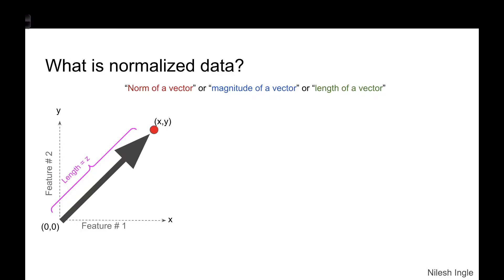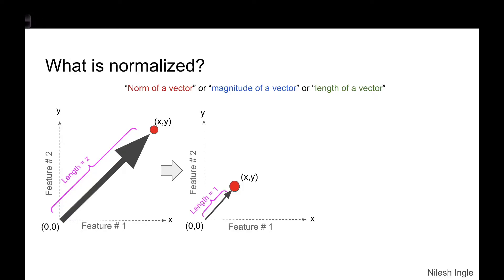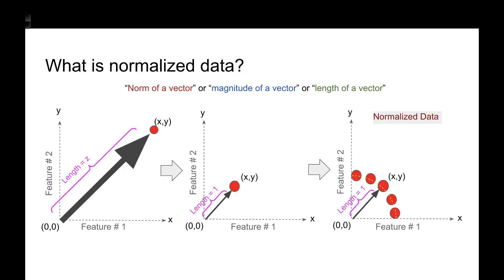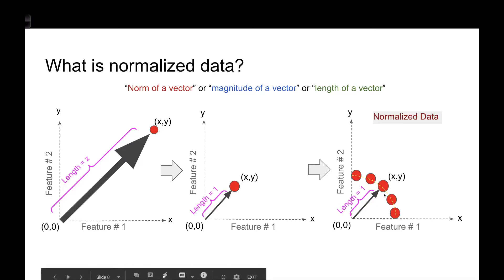Let's consider one of those data points and assume the length of that vector is Z. If we normalize that data, the length of that vector becomes one — a unit norm. When we apply the same normalization to each of those red data points, all the data points end up lying along the circumference of a circle with radius one. That is the normalized data.